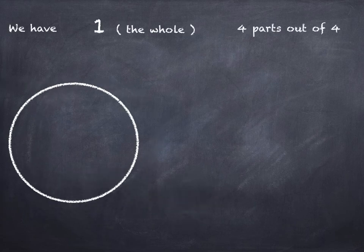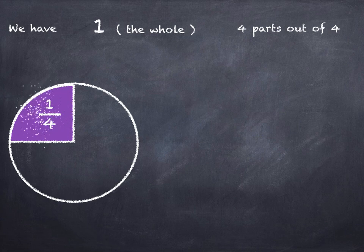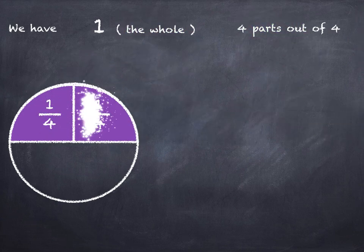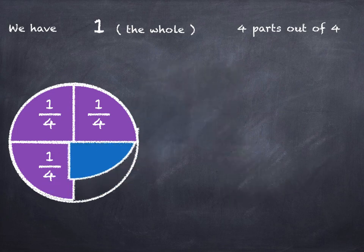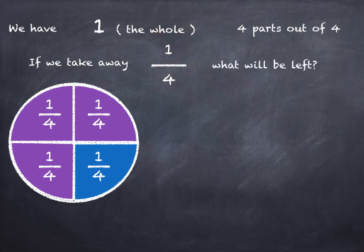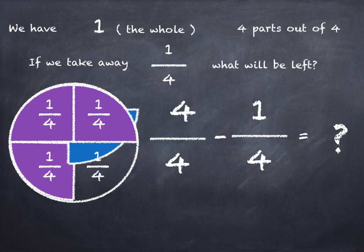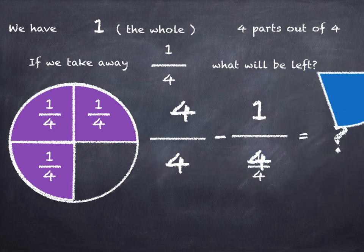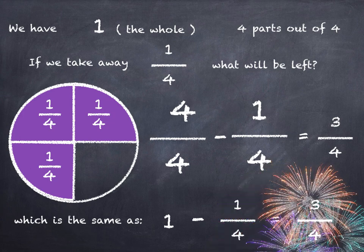This time our whole is made up of four parts. One quarter, two quarters, three quarters, and four quarters. If we take one quarter away, what will be left? Four quarters take away one quarter is how many? Let's take one quarter away, and we can see we've got three quarters left. Which is the same as saying one take away one quarter equals three quarters.